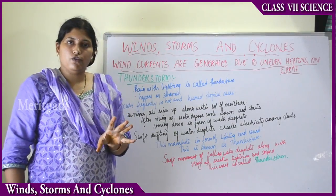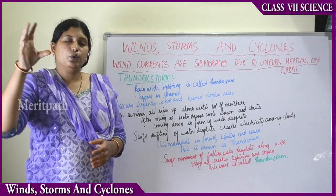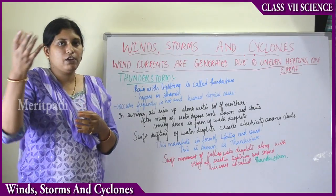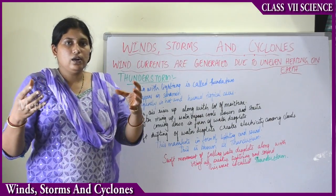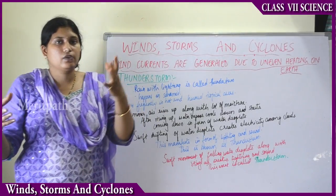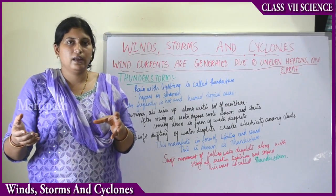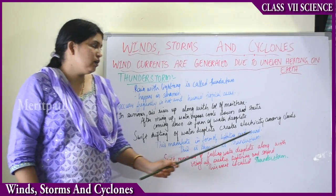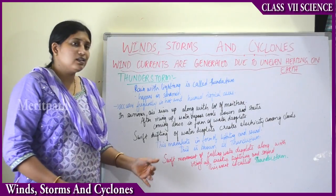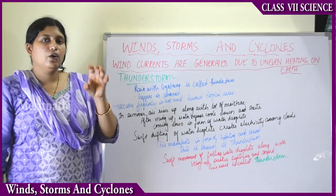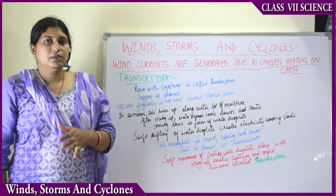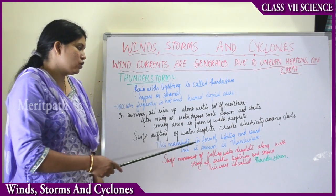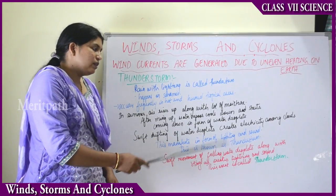Water always rises in the form of warm water vapor on one side, while rain falls as cooler water droplets on the other. The cold falling water droplets and the warm rising air combine and interact, creating electricity and sound among the clouds. This results in thunderstorm in the form of lightning and sound — that is how thunder is caused.